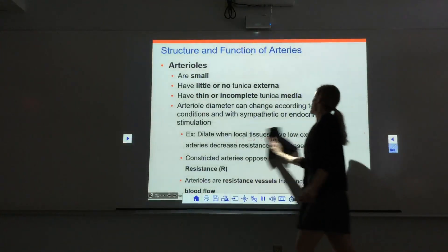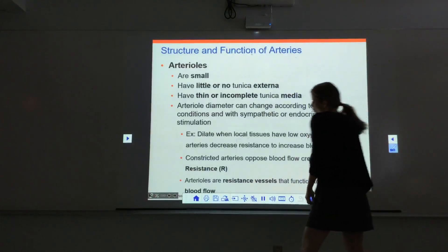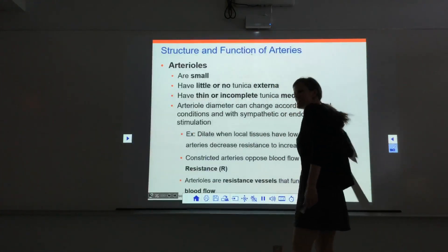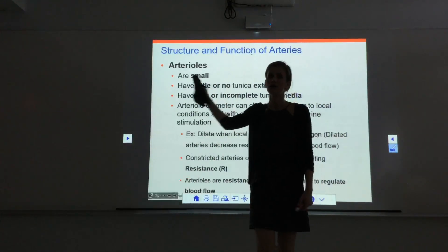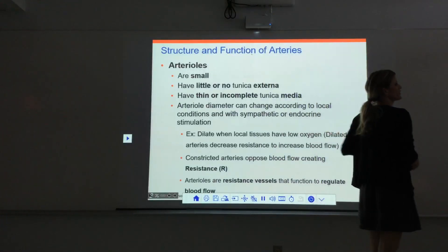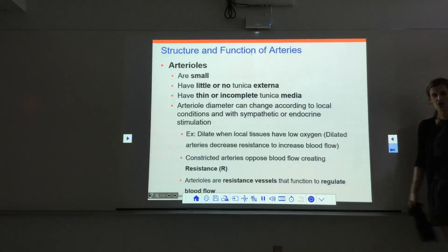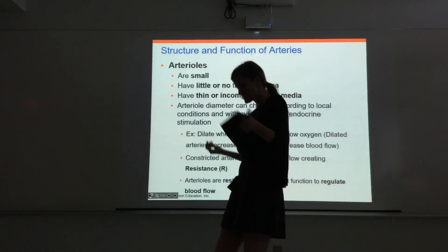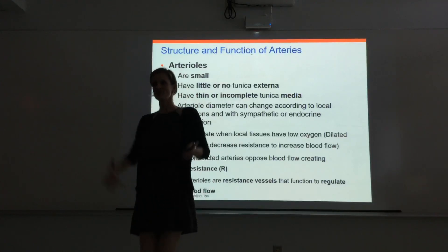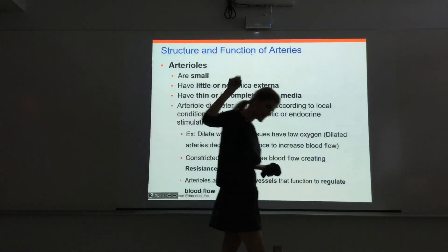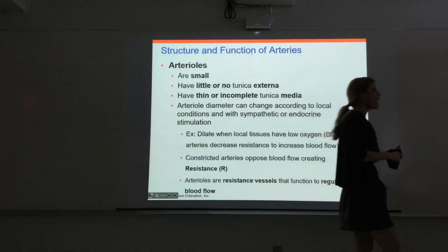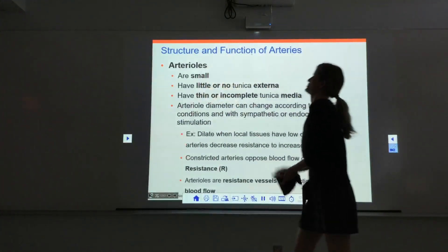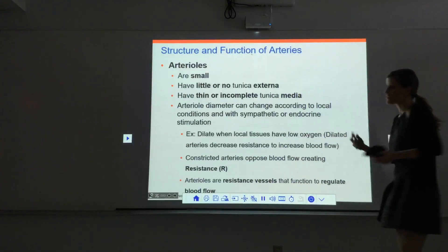Arteries carry blood away from the heart. The first arteries are elastic arteries — they even out the pulse force. Examples: the pulmonary trunk and the aorta. After elastic arteries come muscular arteries, which have more muscle and do pronounced vasoconstriction and dilation. After muscular arteries come the arterioles — our smallest arteries.